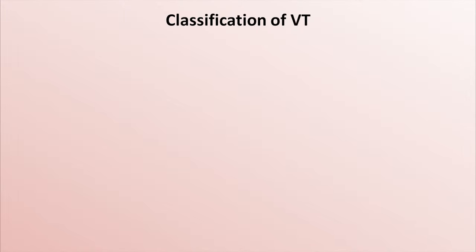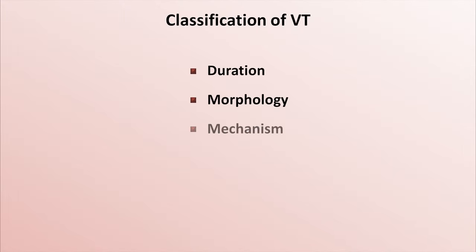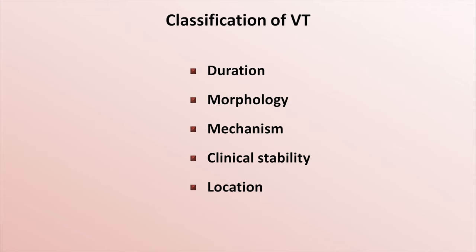VT can be classified in a number of different ways: by duration, morphology, mechanism, the clinical state of the patient, and lastly, the anatomic location of its site of origin. I'm going to go through these one at a time, starting with duration.